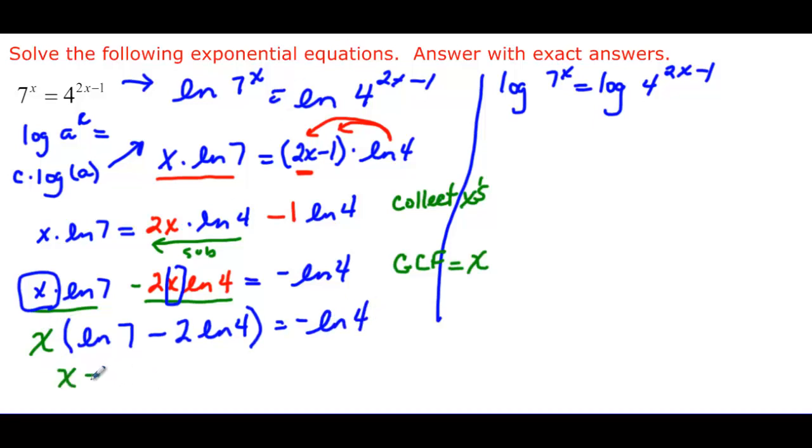And then our final answer will give us that x. And that's going to be equal to, what we had over on the other side, negative ln 4 divided by, and what do we have in blue down there? We have ln 7 minus 2 ln 4. And that would be our final exact answer.